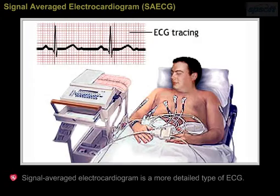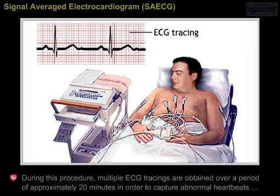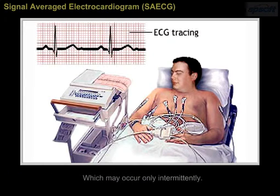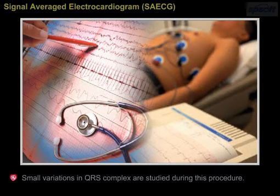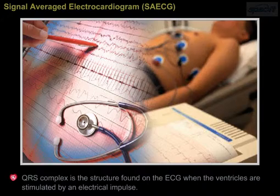Signal averaged electrocardiogram is a more detailed type of ECG. During this procedure, multiple ECG tracings are obtained over a period of approximately 20 minutes in order to capture abnormal heartbeats which may occur only intermittently. Small variations in QRS complex are studied during this procedure. QRS complex is the structure found on the ECG when the ventricles are stimulated by an electrical impulse.